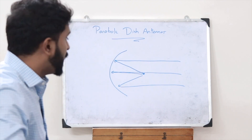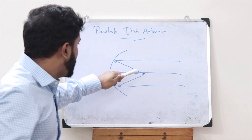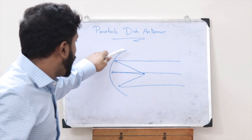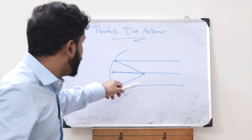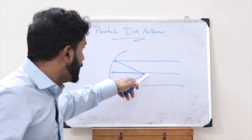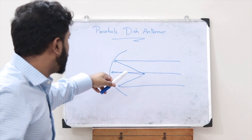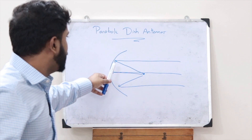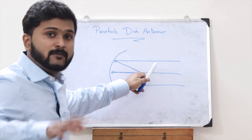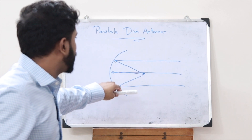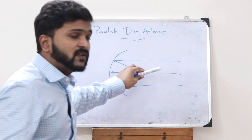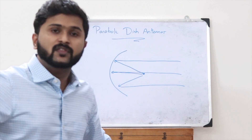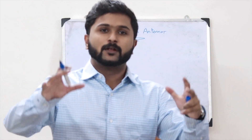This is the basic principle behind parabolic dish antennas: when a point source is placed at the focal point of a parabolic reflector and emits radiations onto this reflector, the reflected rays will be parallel to each other, as you can see here.